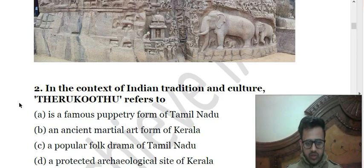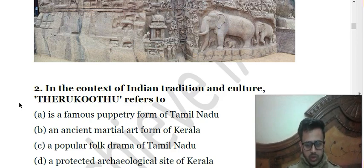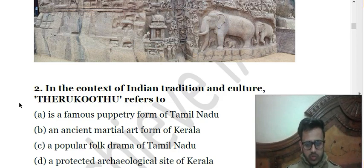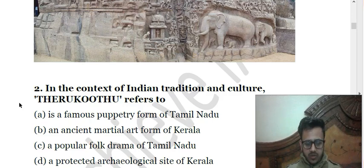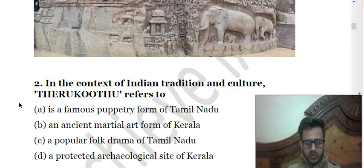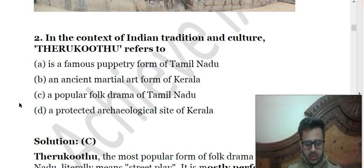The second question: in the context of Indian tradition and culture, Theru Kutthu refers to — A: a famous puppetry form of Tamil Nadu; B: an ancient martial art form of Kerala; C: a popular folk drama of Tamil Nadu; D: a protected archaeological site of Kerala. The correct answer is C — it is a popular folk drama of Tamil Nadu.